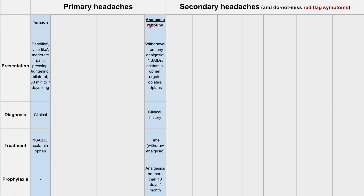Kind of similar in presentation is the analgesic rebound headache. The key defining difference is that this patient will be withdrawing from an analgesic. This can include NSAIDs, acetaminophen, ergodrugs, opiates, or triptans. You'll diagnose this one by the clinical symptoms and the history. So if they've been taking NSAIDs every day for the past four weeks, they might have an analgesic rebound headache when they try to stop.